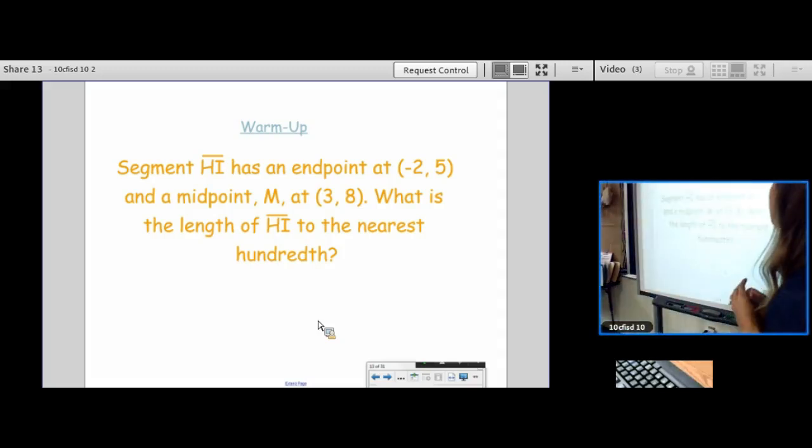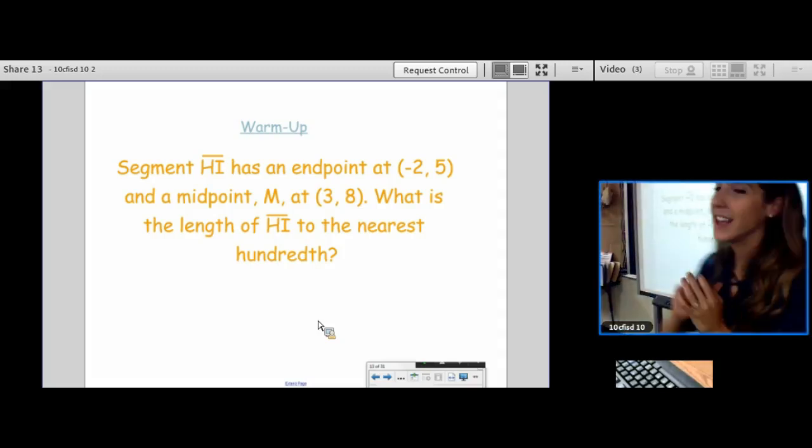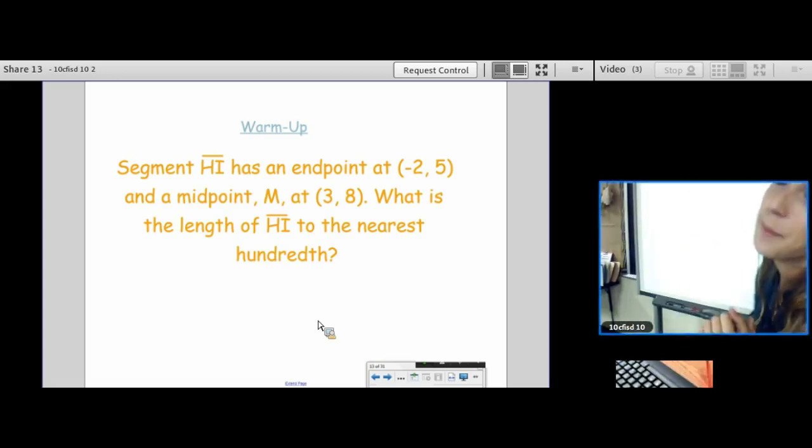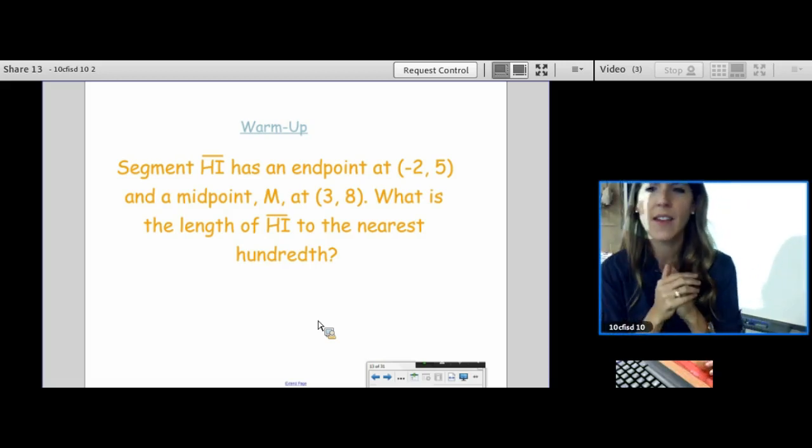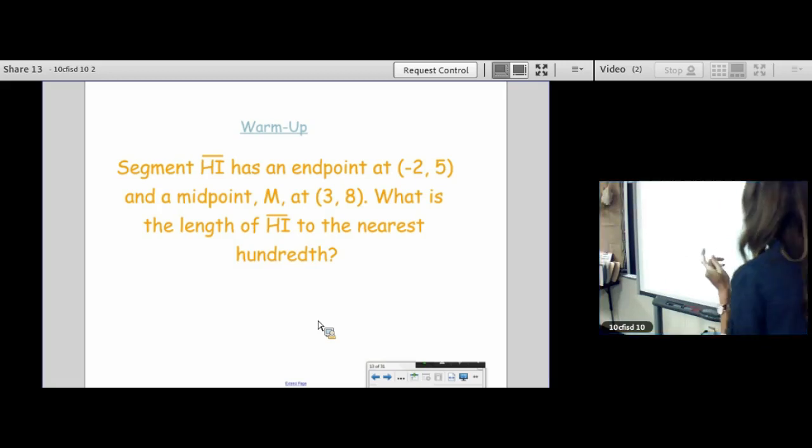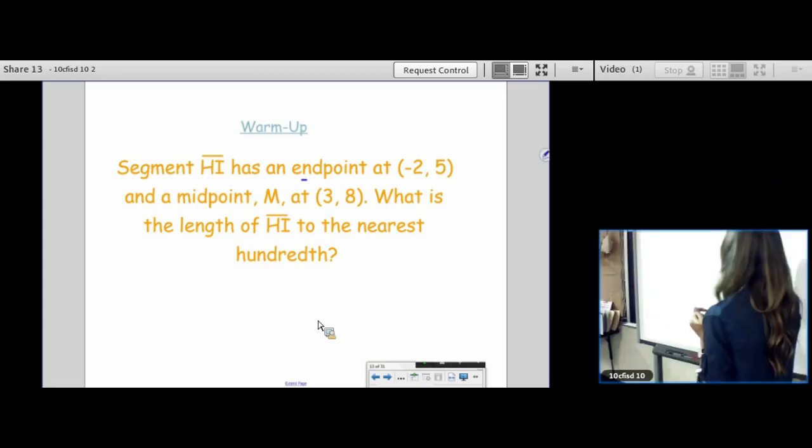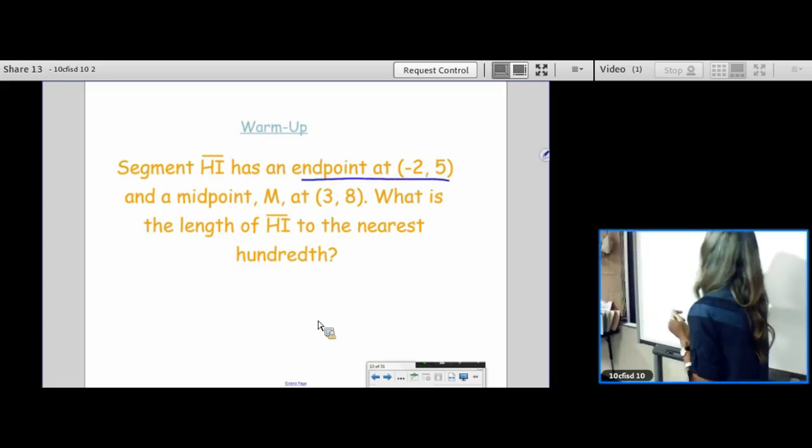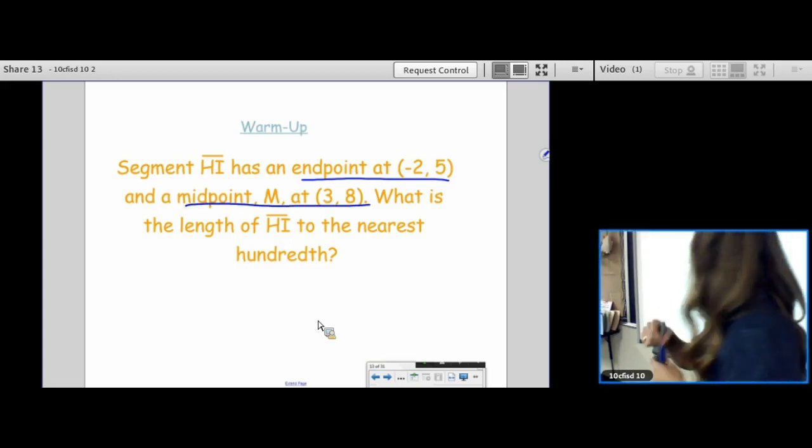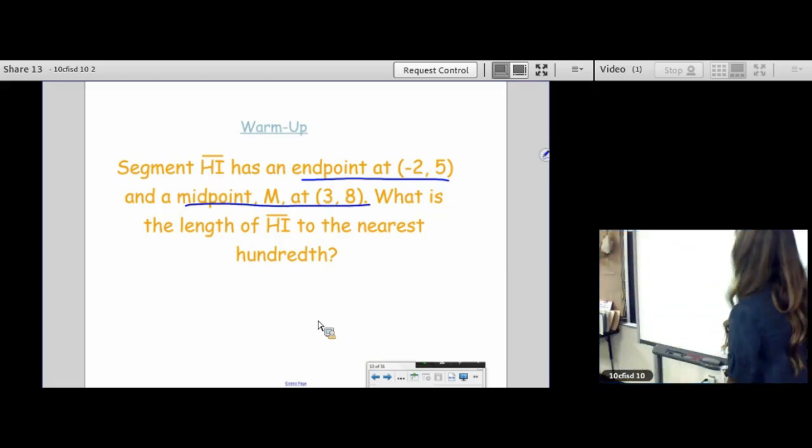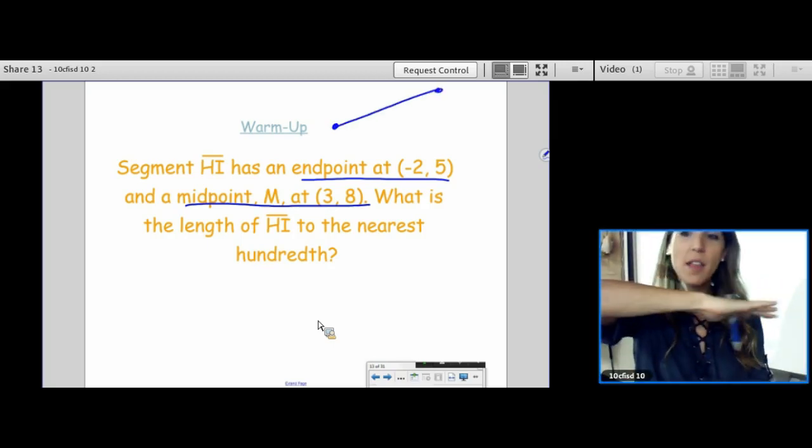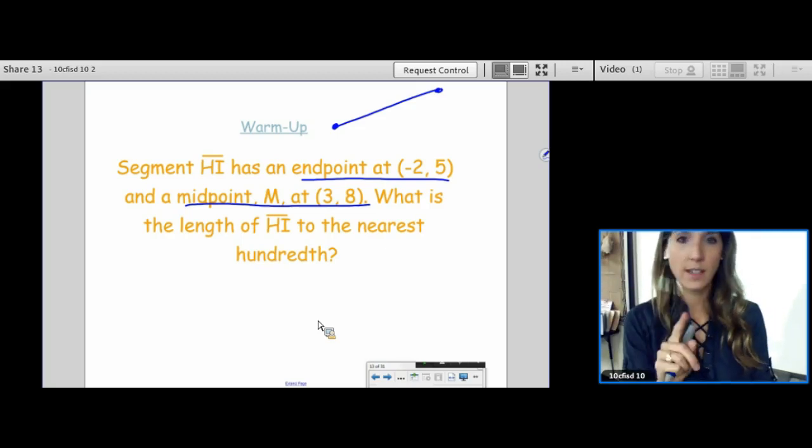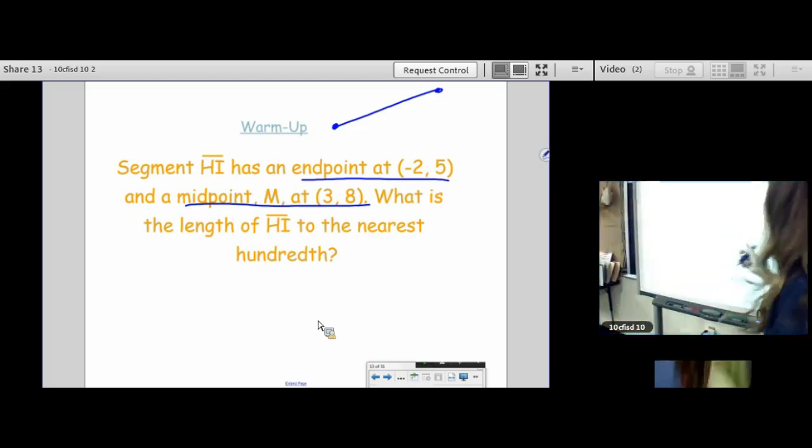All right, let's see what this question is asking. Segment HI has an endpoint at (-2, 5) and a midpoint at (3, 8). What is the length of HI to the nearest hundredth? So let's see what information we have. We have an endpoint and a midpoint. Let's draw the segment. And on purpose, I am not going to draw it flat because I know that this is 2D, not 1D. This is not a number line, this is coordinate plane.